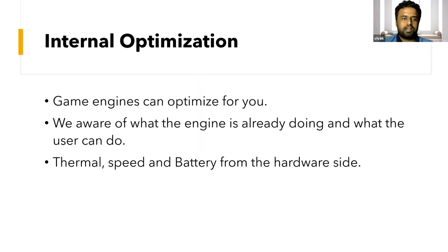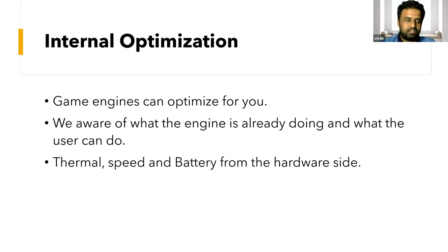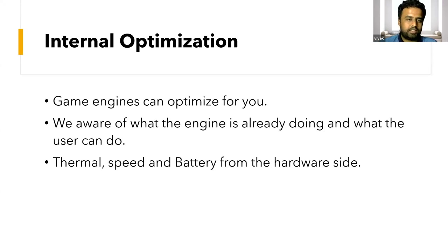Internal optimization is something the game engines do for you automatically — you don't have to worry about it, but you have to be aware of what it is doing and what it is not doing. For example, the batching I just spoke about — combining meshes to optimize draw calls — is something Unity already does automatically. Be aware if it's doing it or not. Also the hardware itself will do certain things like thermal throttling — dynamically decreasing or increasing clock speed.